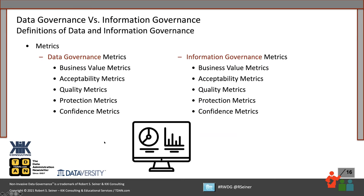With metrics, you can use the same categories. We can define business value metrics — what business value are we adding by governing our information assets? How well has information governance been accepted into the organization? What's the quality of the information? How are we protecting it? What level of confidence do we have in it? Most organizations are looking for business value metrics, acceptability metrics, quality protection, and confidence metrics — how confident can we be in the data and information we're accessing?